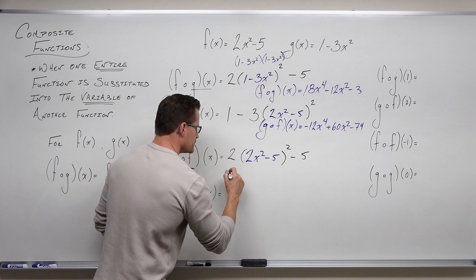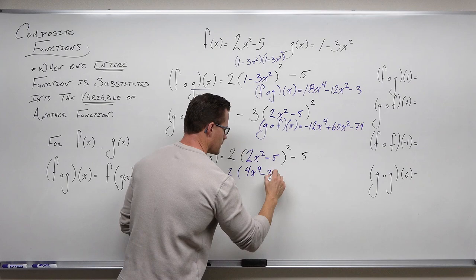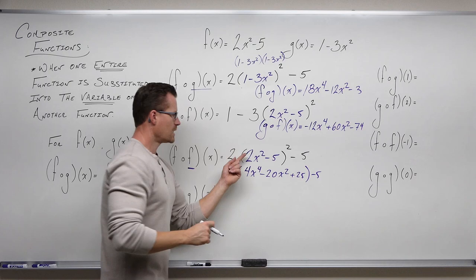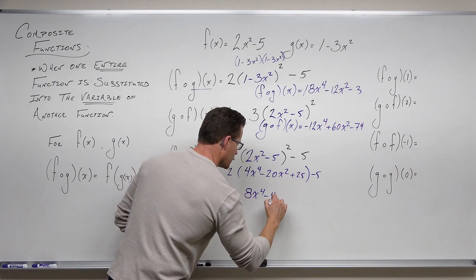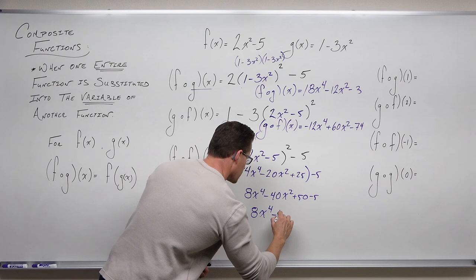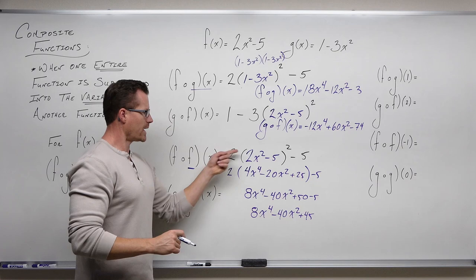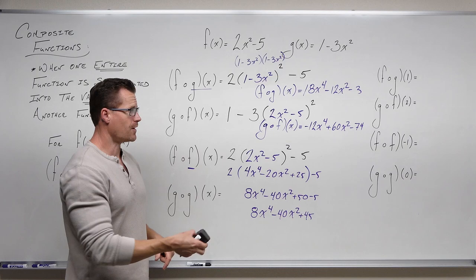So we have 2 times (2x squared minus 5) squared minus 5. Distributing (2x² minus 5)² gives us 4x⁴ minus 20x² plus 25. We distribute the 2 to get 8x to the 4th minus 40x squared plus 50, and then subtracting 5 gives us 8x to the 4th minus 40x squared plus 45. That is the composition f of f of x.